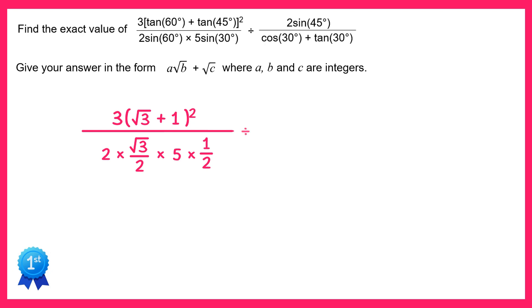Then we divide this by the second fraction. On the top of this fraction we've got 2 times sine 45° which is 2 times square root 2 over 2, and on the bottom we've got cos 30° which is root 3 over 2 plus tan 30° which is 1 over root 3.